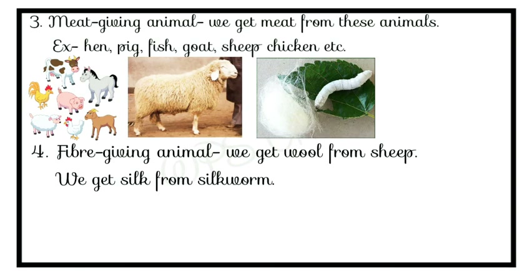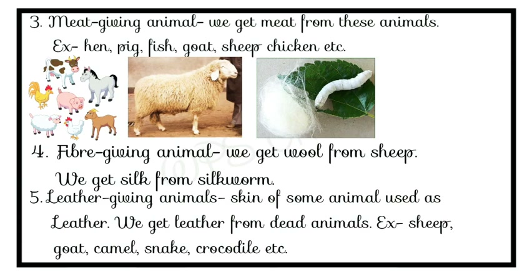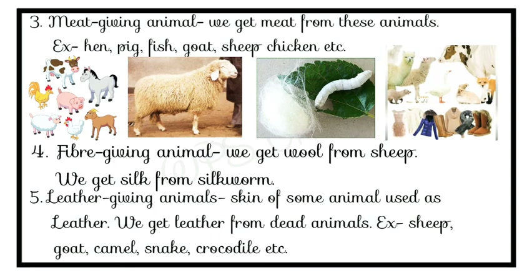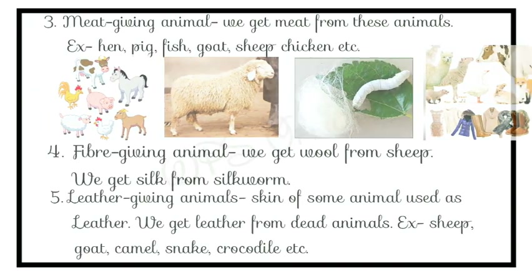The fifth category is leather-giving animals. The skin of some animals is used as leather. We get leather from the skin of dead animals such as sheep, goat, camel, snake, and crocodile. Snake and crocodile leather is quite strong and hard, so it is used to make bags and decorative items.